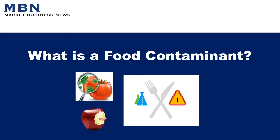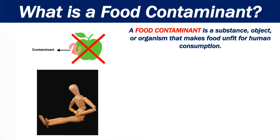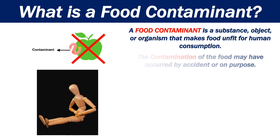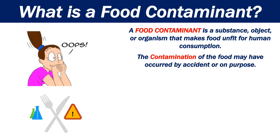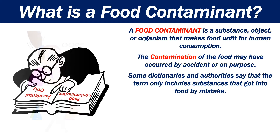What is a food contaminant? A food contaminant is a substance, object, or organism that makes food unfit for human consumption. The contamination of food may have occurred by accident or on purpose. Some dictionaries and authorities say that the term only includes substances that got into food by mistake.